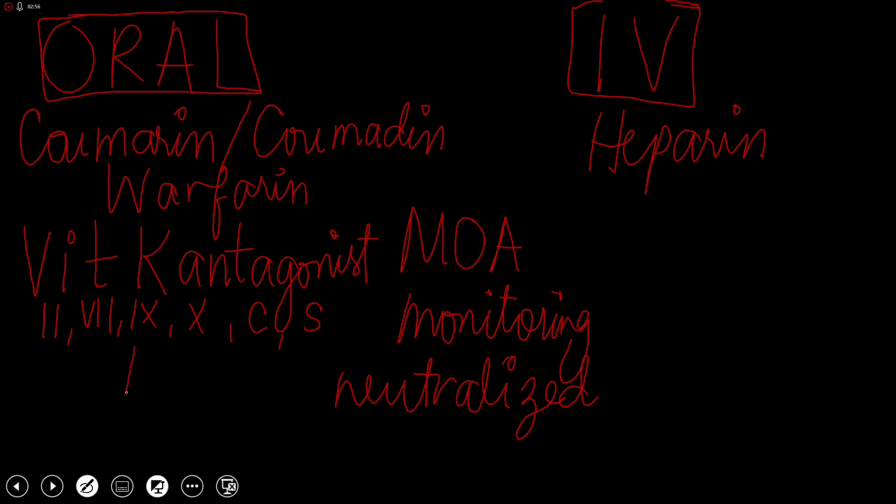Monitoring is done via PT. That's because PT is the test requested for detection of deficiency in factor VII. Factor VII, among the factors listed, has the least half-life. When vitamin K is starting to be deficient, factor VII will be the first factor affected. Overdose will be neutralized by giving vitamin K or fresh frozen plasma to replenish the coagulation factors that are lost.